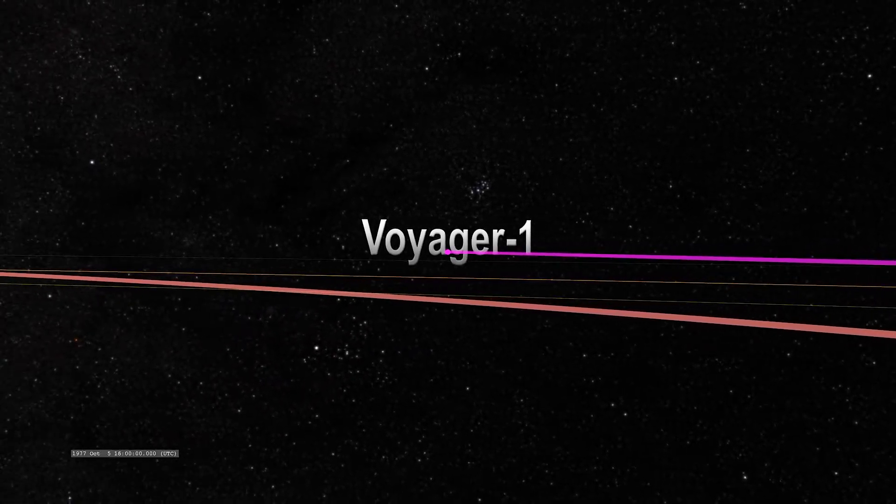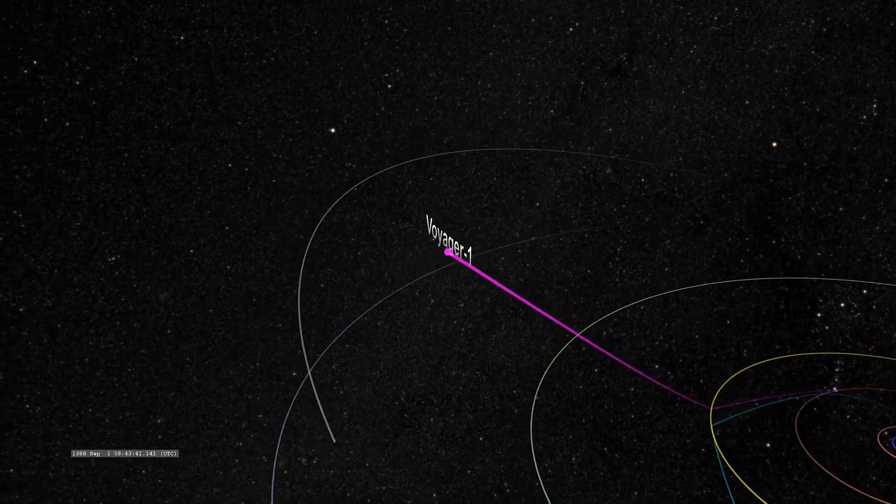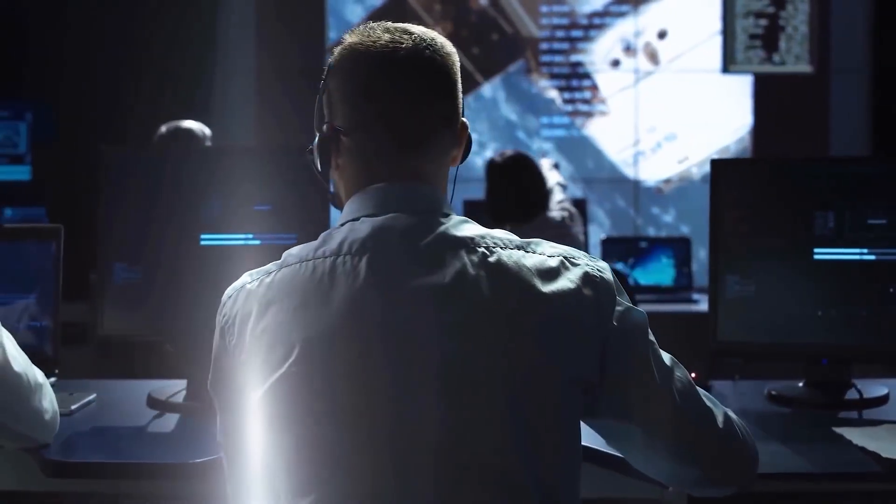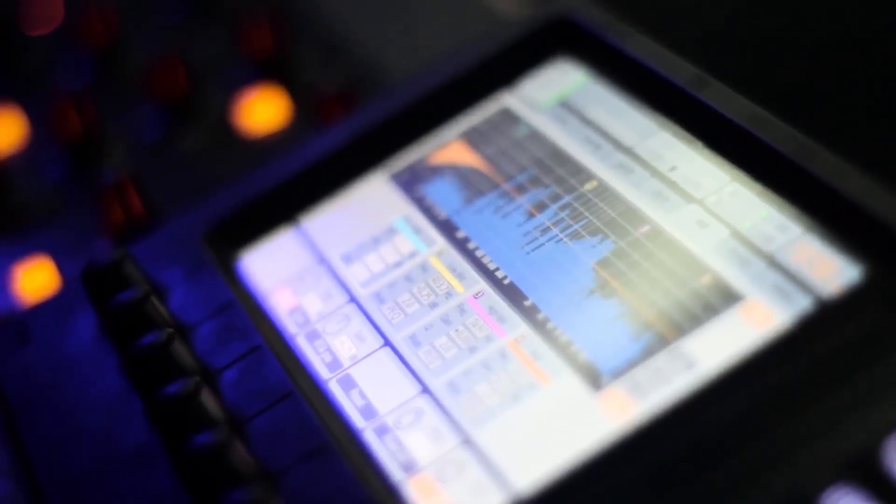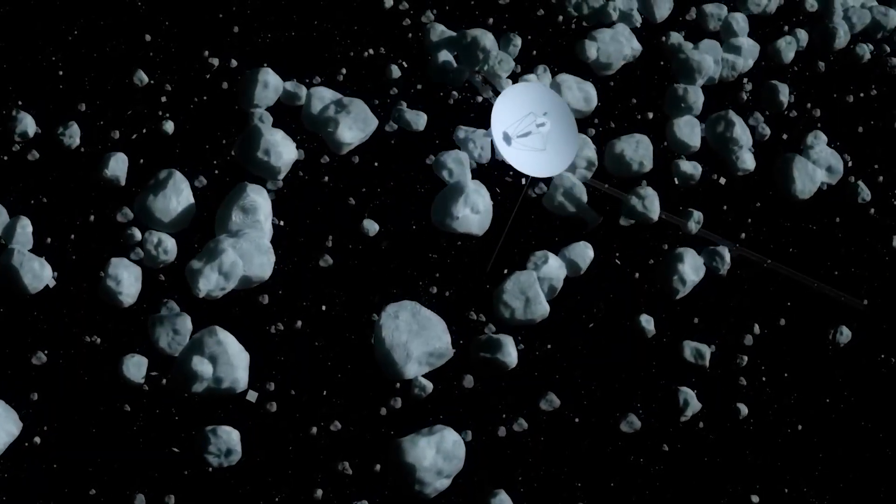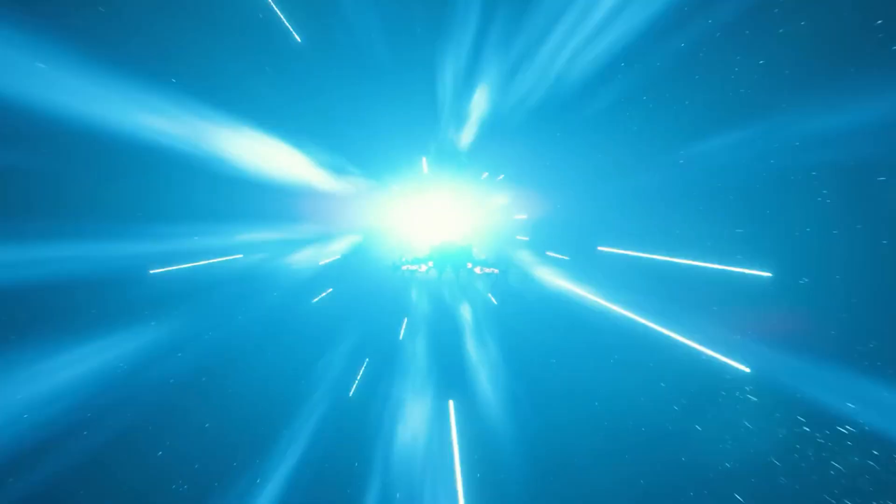As Voyager 1 passed through the Kuiper belt, a region of the outer solar system beyond Neptune's orbit, it detected a strange signal that seemed to be emanating from beyond the boundaries of our galaxy. The signal was unlike anything ever detected before, and it appeared to be coming from a source that was moving at an incredible speed, much faster than anything in our solar system.